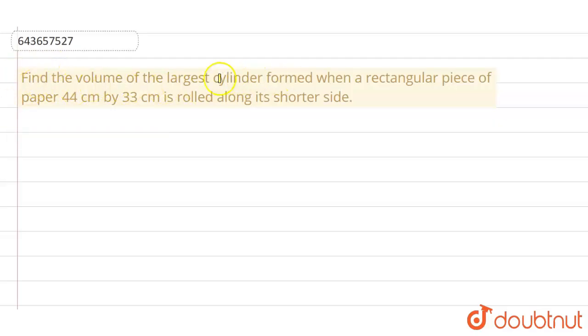The following question says: find the volume of the largest cylinder formed by a rectangular piece of paper 44 centimeter and 33 centimeter. It's rolled along the shorter side.